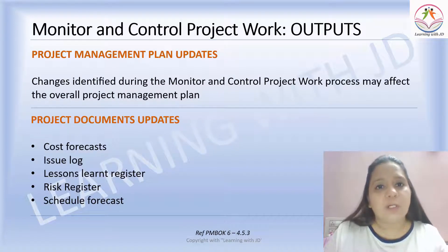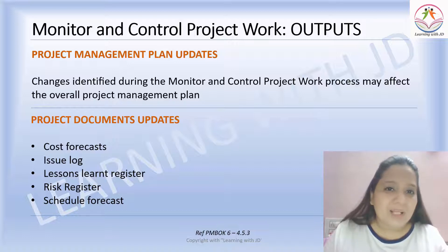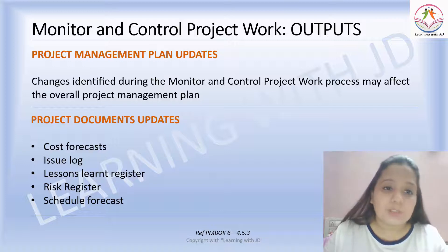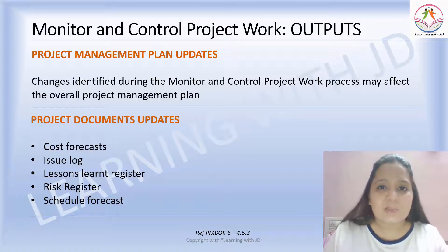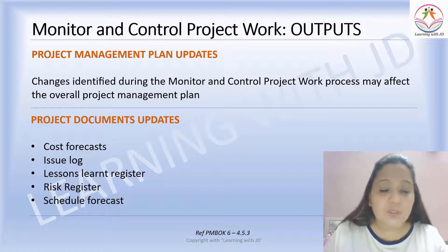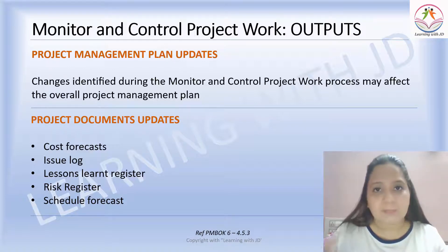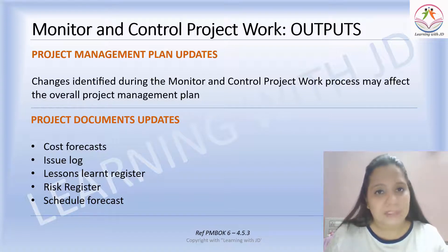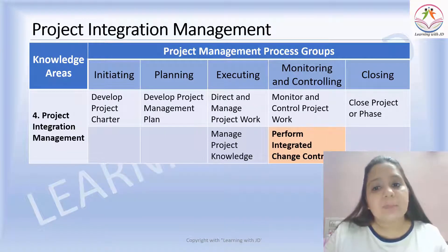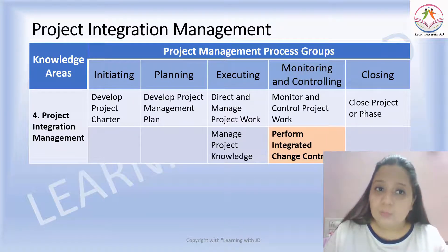The outputs of monitor and control project work include project management plan updates and project document updates. Changes identified during monitor and control project work may affect the overall project management plan. Project documents that may be updated include cost forecast, issue log, lessons learned register, risk register, and schedule forecast. That's about the monitor and control project work process.